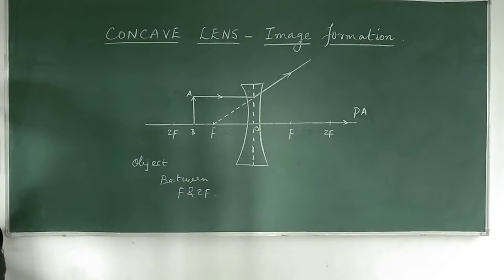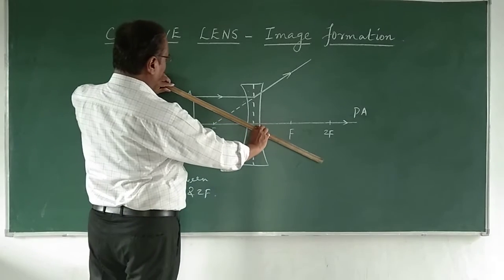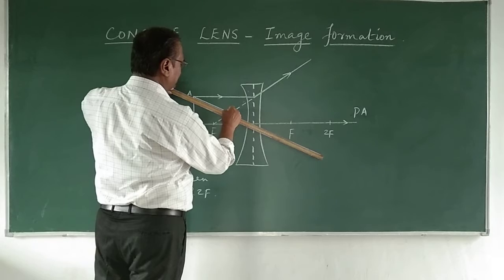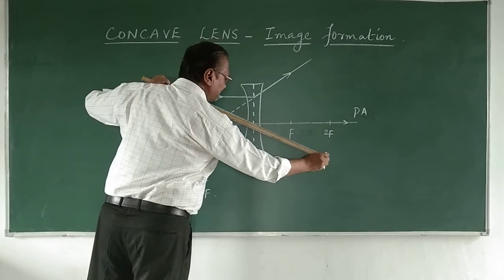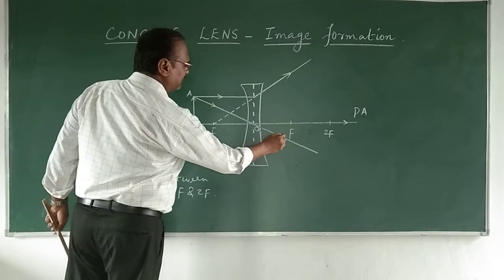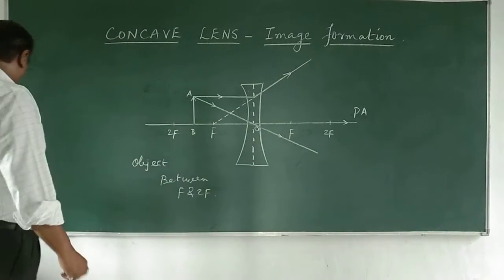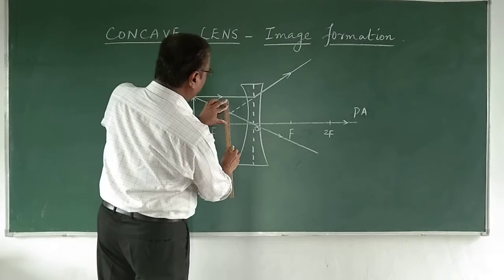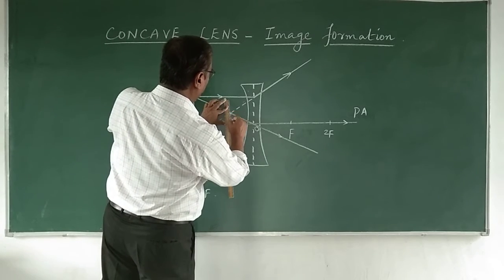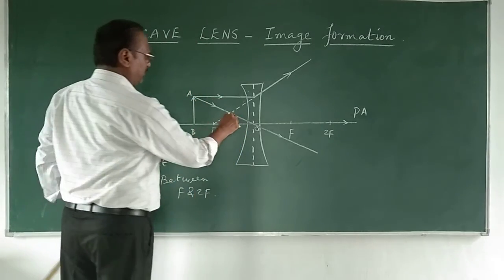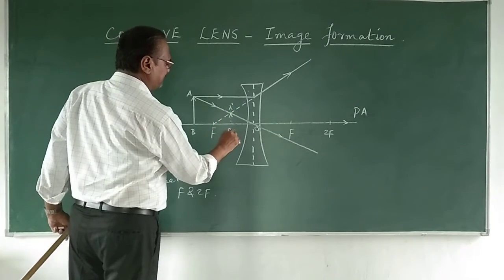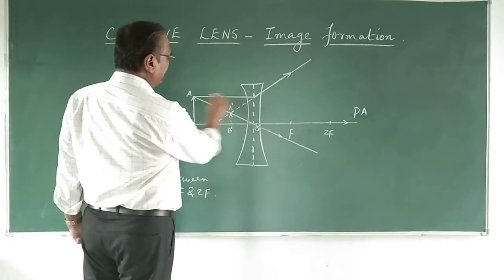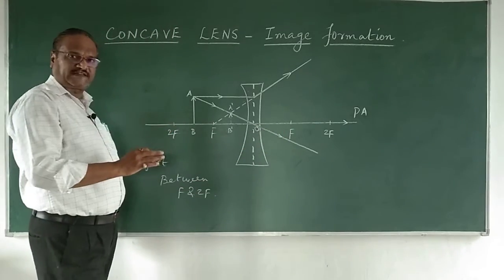We need another ray — a ray from the tip of the object passing through the focus. As it passes through the focus, it goes out like this. You can clearly see that these two rays are meeting at a point in front of the lens, on the same side as the object. So A dash B dash is the image being formed. These two rays suffice to locate the image.